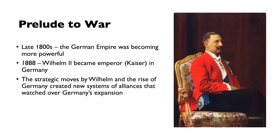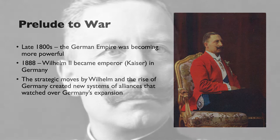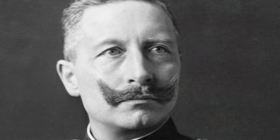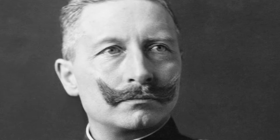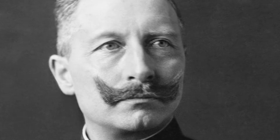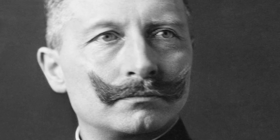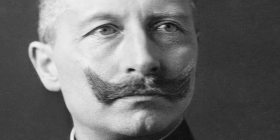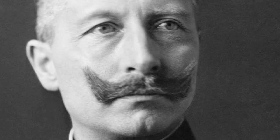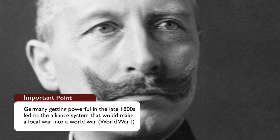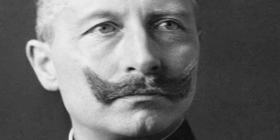Prelude to War. Late in the 1800s, the German Empire was becoming more and more powerful, though there had been decades of peace in Europe. In 1888, Wilhelm II became Emperor, or Kaiser, in Germany. He was the grandson of Queen Victoria from Britain and admired the British Empire and its royal navy, so he wanted to build up Germany's navy. Britain and other nations felt threatened by this rising Germany. The strategic moves of Wilhelm and the rise of Germany in the late 1800s created new systems of alliances that watched over Germany's expansion — alliances which would make the war even worse, turning it from a local war into a world war.